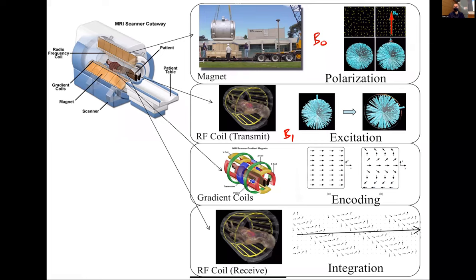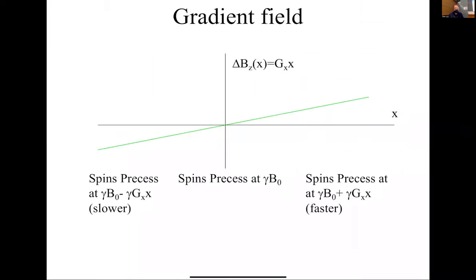I'll spend quite a bit of time on encoding because that is essentially how we make our images. So we're going to use these gradient fields, and this is going to create a delta B-Z field. Remember, this is the isocenter — spins at the isocenter precess at gamma times B0. When we turn on this gradient field, the field here is stronger, so spins here precess proportional to the local magnetic field. The Larmor frequency of spins in the stronger region is higher, and in the weaker region it is lower.